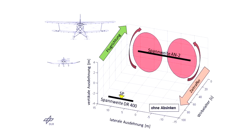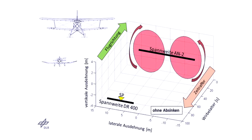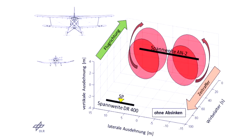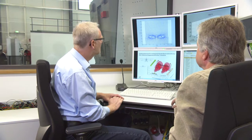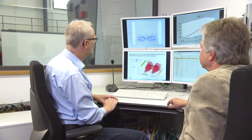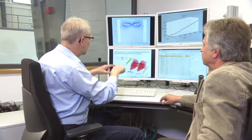This animation shows how the danger zones develop over time. The third ring of this danger zone shows roughly what was happening on the day of the accident, namely that the DR-400 took off 40 seconds after the biplane. You can clearly see that the danger zone is so large that it almost exactly covers the wingspan of the DR-400.